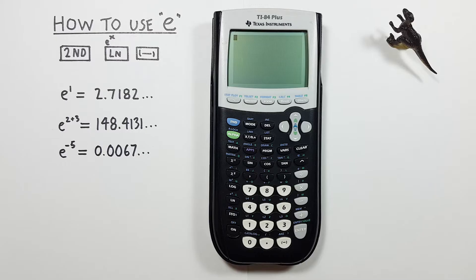E is also known as Euler's number or natural antilog, on the Texas Instruments TI-84 Plus graphing calculator.